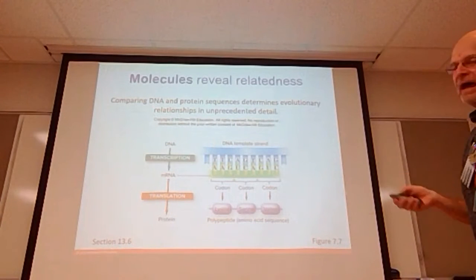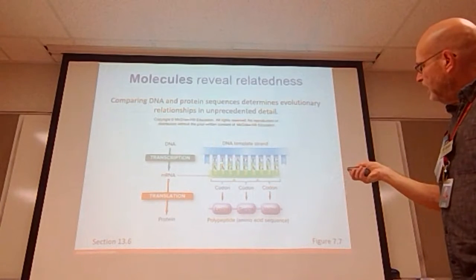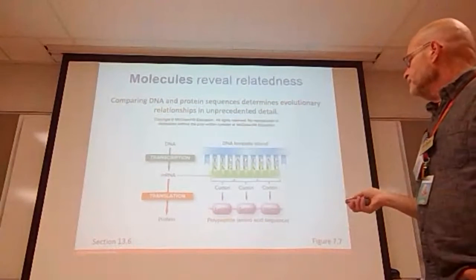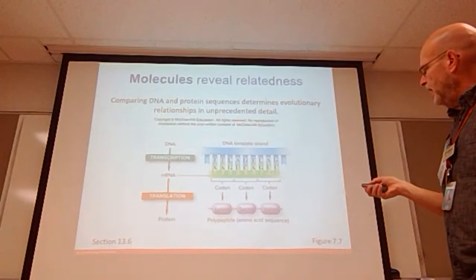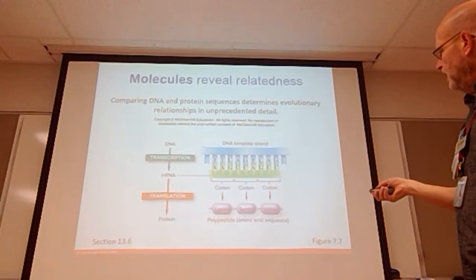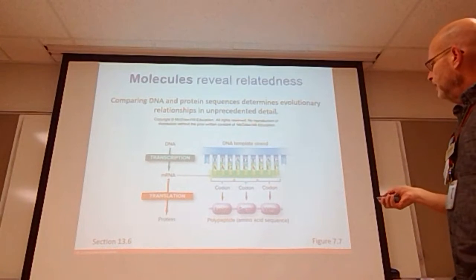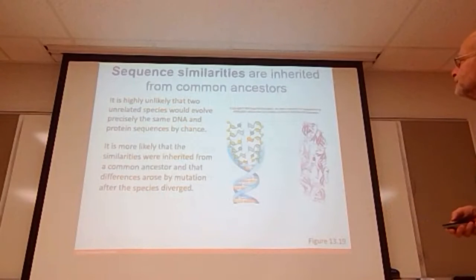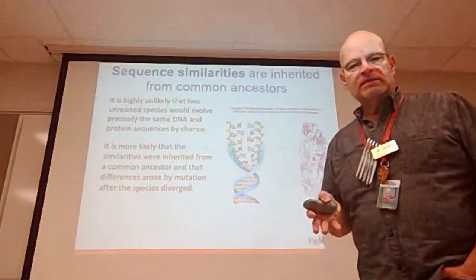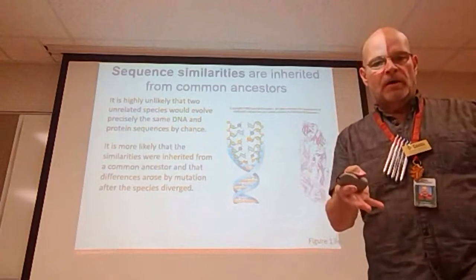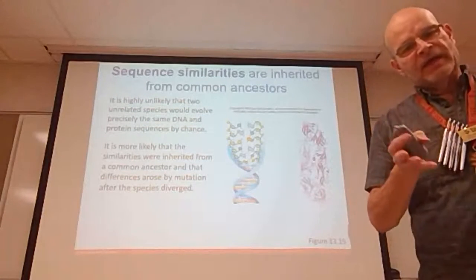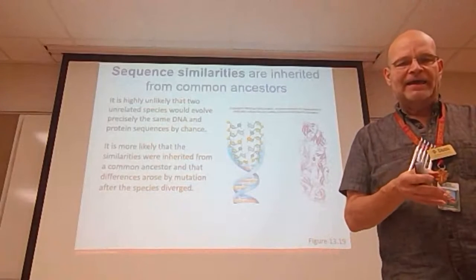Molecules reveal relatedness. When we look at DNA, we take a DNA template of organism A and organism B and compare how similar they are. This involves DNA transcription to make messenger RNA, which through translation makes a protein — for example, AAG gives us lysine, UCA gives us serine, and GUC gives us valine. Comparing these sequences between organisms tells us how related they are. We can look at different cactus species — and yes, both 'cacti' and 'cactuses' are correct plurals.